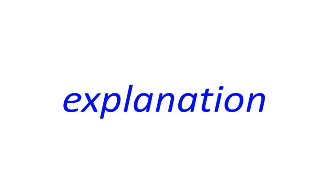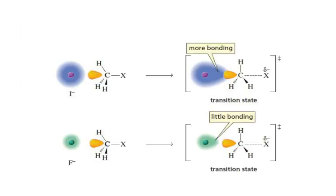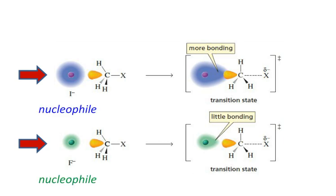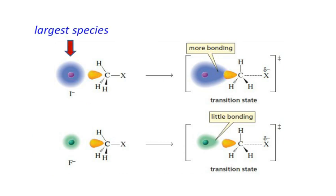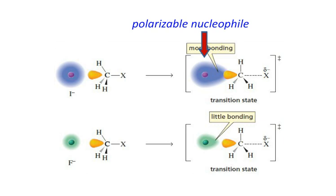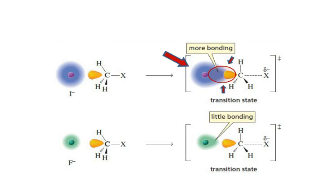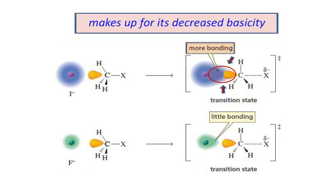To explain this phenomenon, let's have a look at the next figure. Remember that an electron-rich species is called a nucleophile when it reacts with carbon. Because iodine ion is the largest species, it makes it a polarizable nucleophile and it's easier for it to overlap with the orbital of carbon, resulting in a greater degree of bonding with the carbon in the transition state, which makes up for its decreased basicity and makes it the strongest nucleophile.